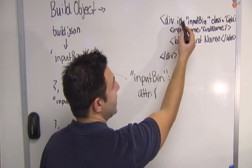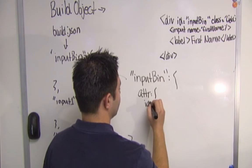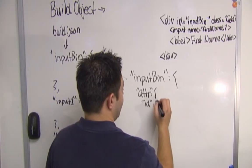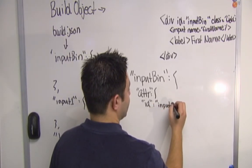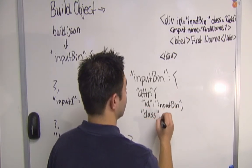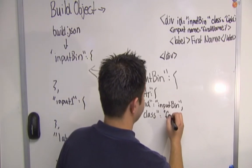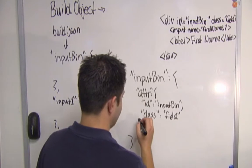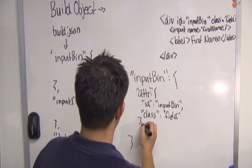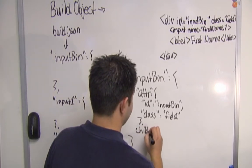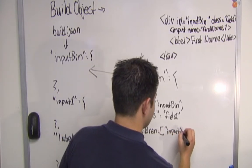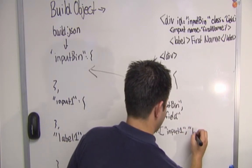But we do need to specify attributes, which is an object. The key or the property name being ID. These all need to be in quotes since it's JSON again. And it's going to be ID input bin and class field. And we'll close out that object. And then it will have the children, like we just talked about, of input one and label one.